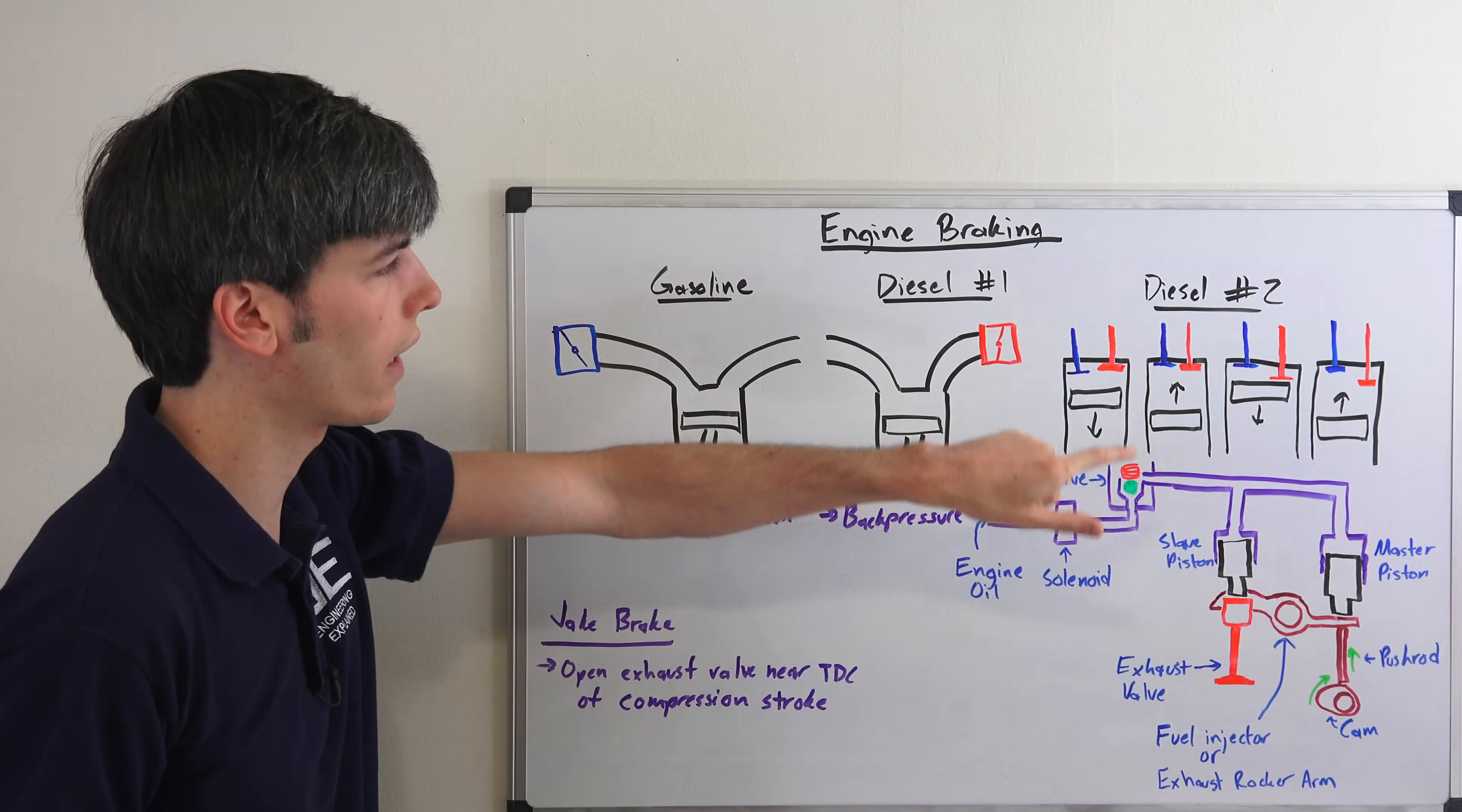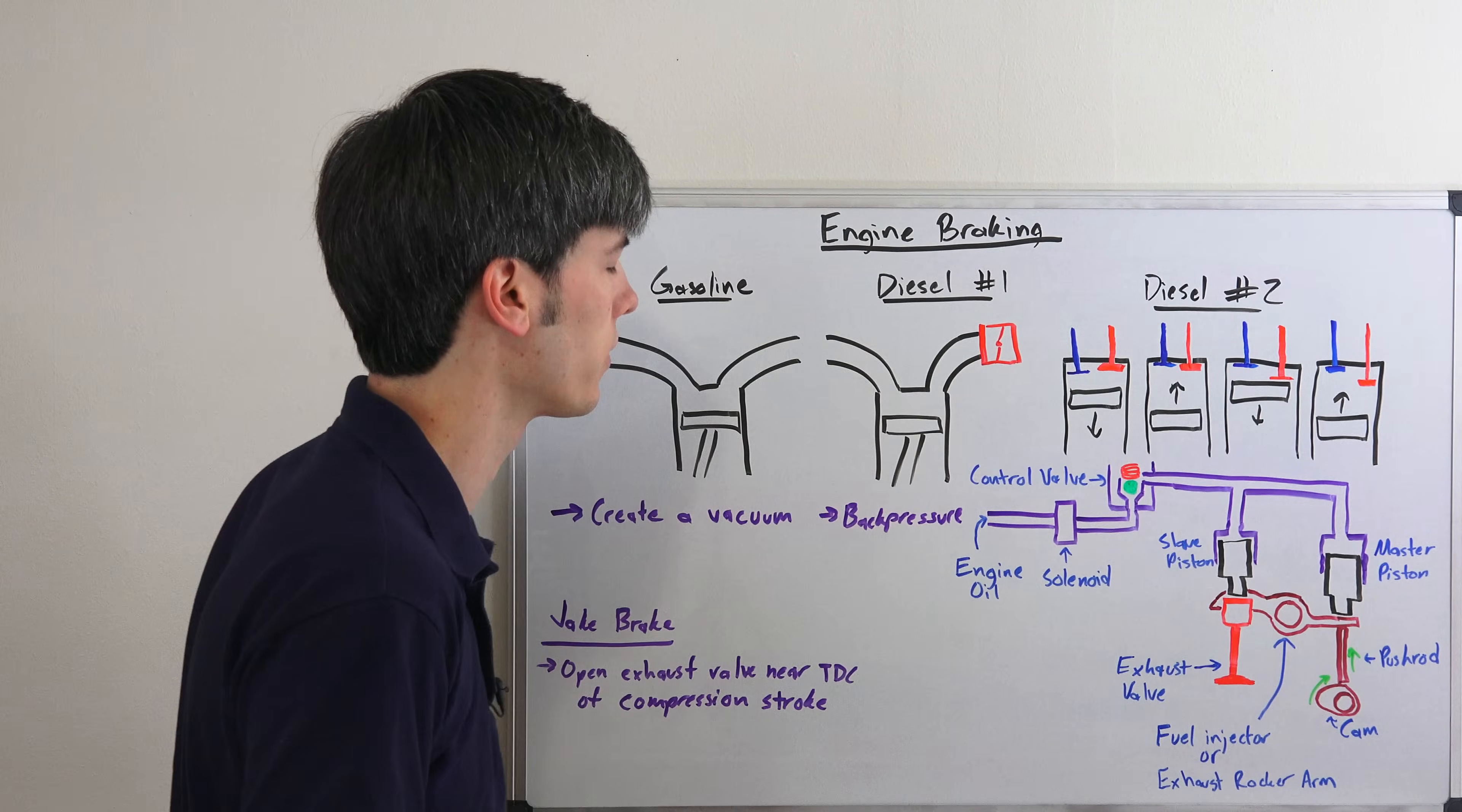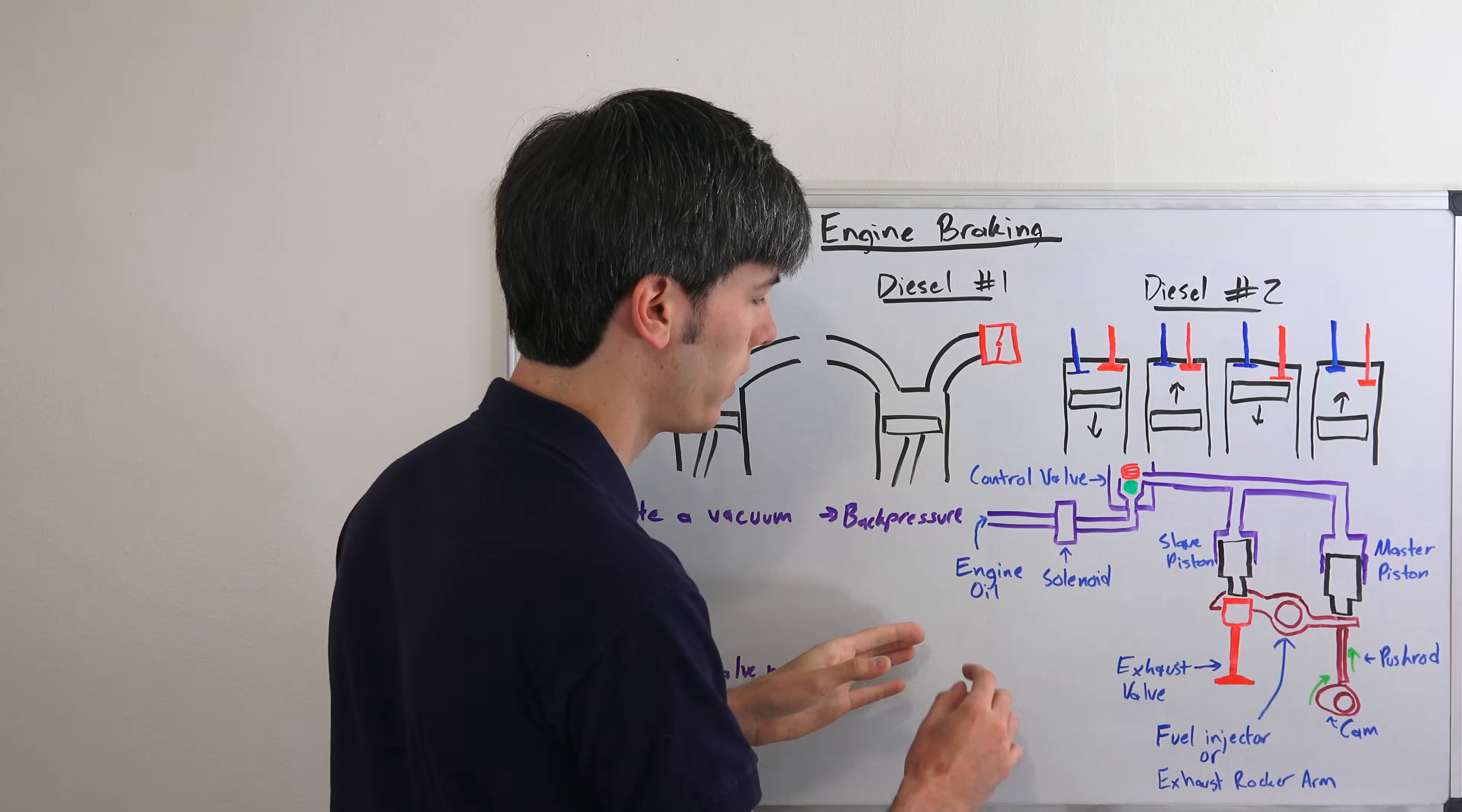So how does this work? How does it open up that exhaust valve right at the top dead center or very close to it? And obviously there's going to be clearances so that that valve can open up and it won't come into contact with the piston. So here we have what the system is going to look like and you've got this little engine oil path right here.